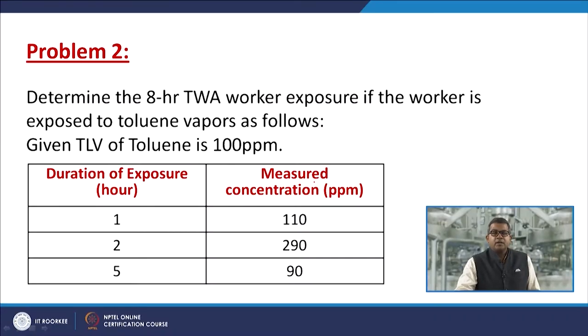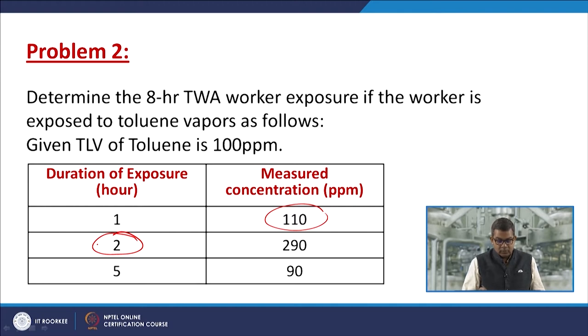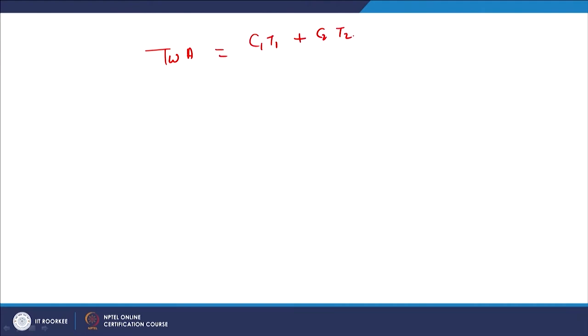Problem 2: Determine the 8-hour TWA worker exposure to toluene vapours given the following scheme — 1 hour at 110 ppm, 2 hours at 290 ppm, and 5 hours at 90 ppm. The formula to use is: TWA = (C1·T1 + C2·T2 + ... + Cn·Tn) / 8 hours, where C is concentration and T is time duration.